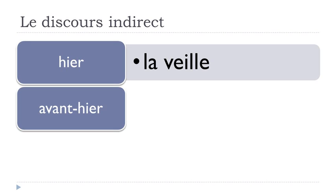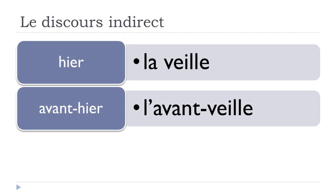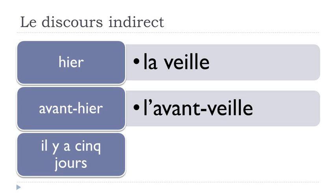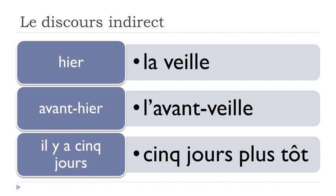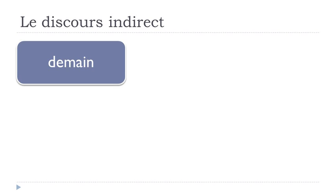Avant-hier — the day before yesterday — becomes l'avant-veille. Il y a cinq jours — five days ago — becomes cinq jours plus tôt. So: hier becomes la veille, avant-hier becomes l'avant-veille, and il y a cinq jours becomes cinq jours plus tôt.